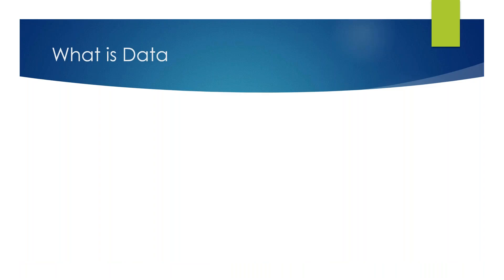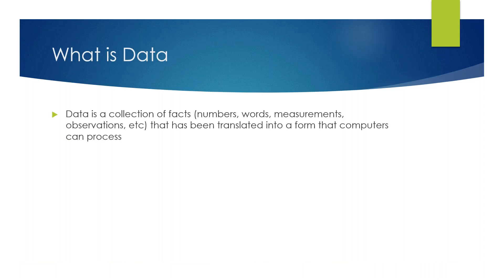So, what is data? Data is basically just a collection of facts — it could be numbers, words, measurements, observations, etc. It is translated into a form which computers can process. It's essentially another word for information, and because it's not humanly possible to understand such huge amounts, it needs to be in a form that computers can understand.